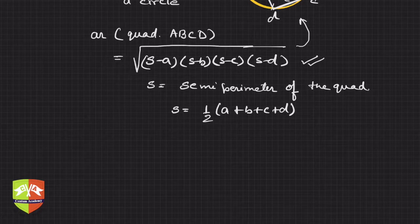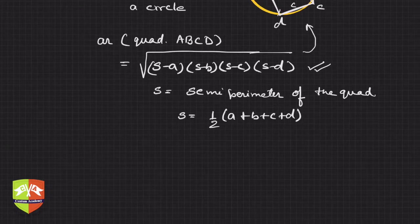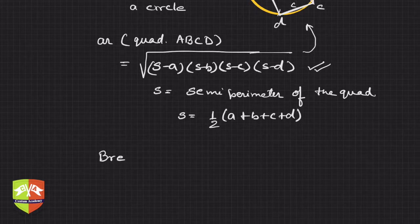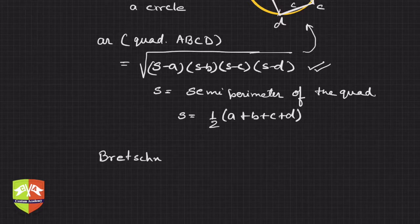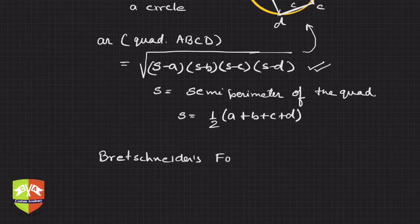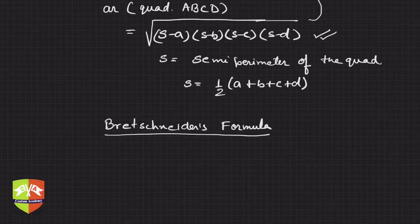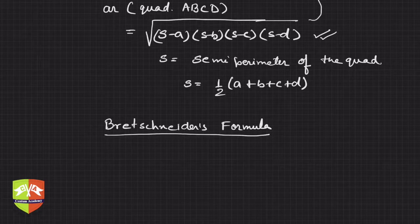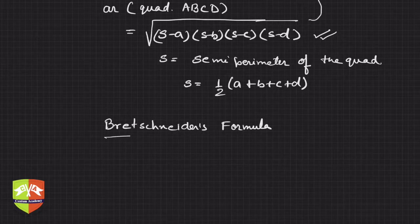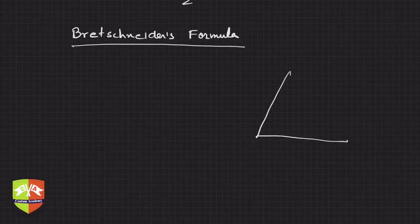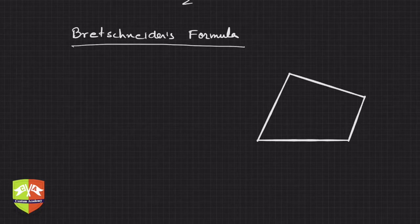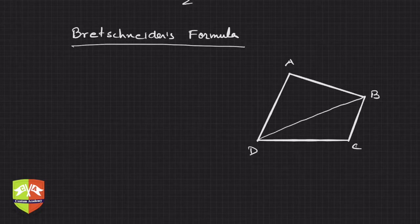This formula also is a specific case of another formula. This particular formula holds only for cyclic quadrilateral. But this is also a special case of something called Bretschneider's formula. Those who know trigonometry will be able to understand this. This formula talks about any quadrilateral in general, so you don't need to have cyclic quadrilateral. Bretschneider's formula is valid for any quadrilateral.